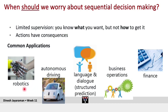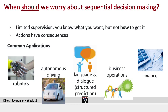RL applications include robotics, autonomous driving, and interestingly, language and dialogue. For example, a chatbot is the agent and the human is the environment; the chatbot executes actions — saying the right things — to accomplish some task. You could also do business operations like operating a power plant, or making financial decisions about which stocks to invest in or divest from, with the stock market as the environment.